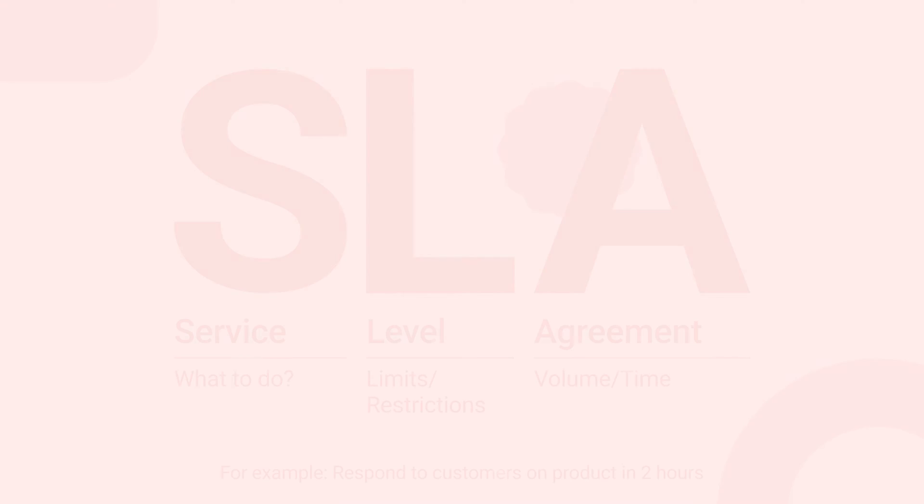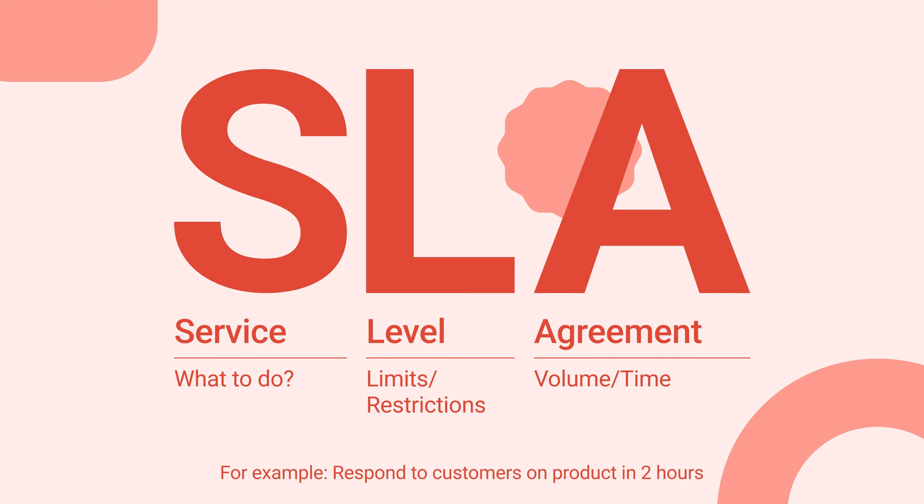What is SLA? A service level agreement is a set of agreements between the service provider and customer defining the expected level of service, including response time, resolution time, and service availability. It holds the service provider accountable for meeting customer expectations.